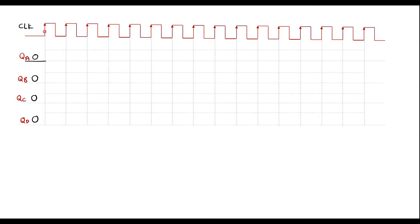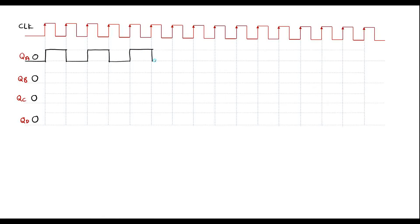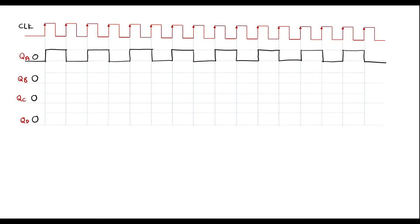When the first positive edge of the clock signal arrives, QA toggles high and remains high until the next positive edge, where it becomes 0. Again it is 0 until the next positive edge, where it goes high, then low again. This process continues — QA output toggles at every positive edge of the clock. The positive edges of the QA output itself are also marked here.